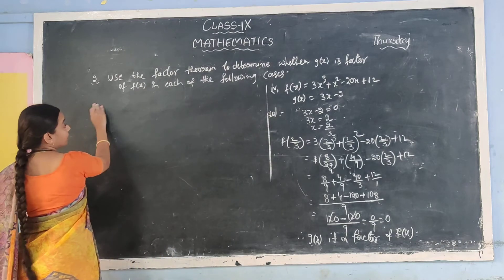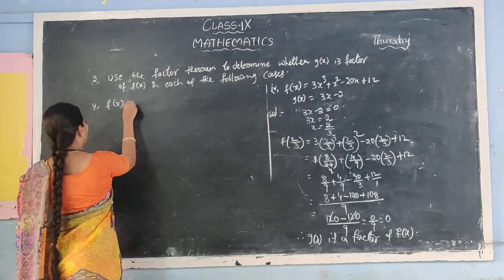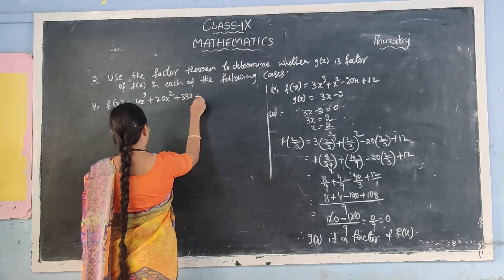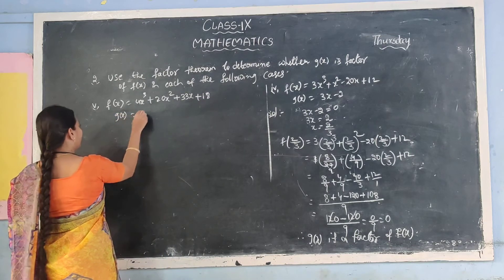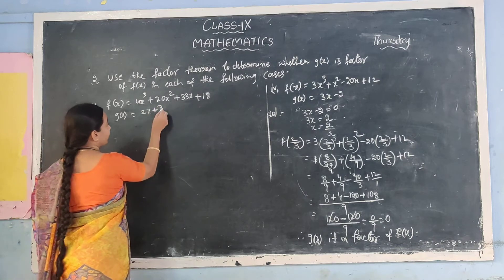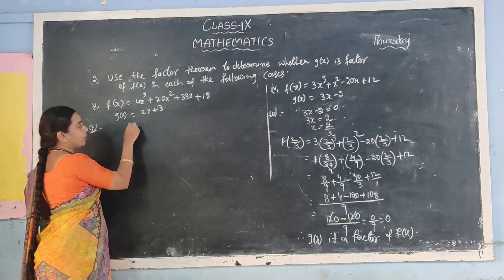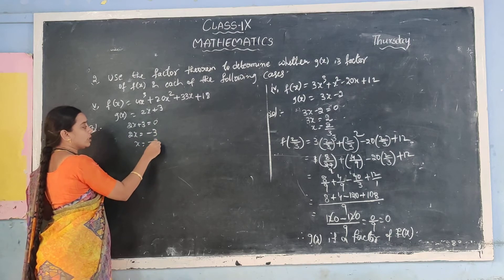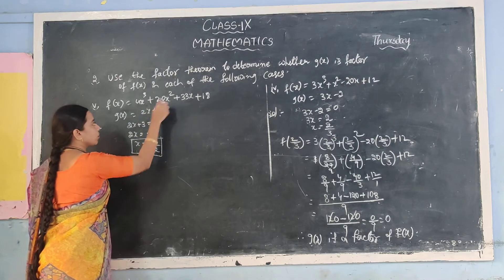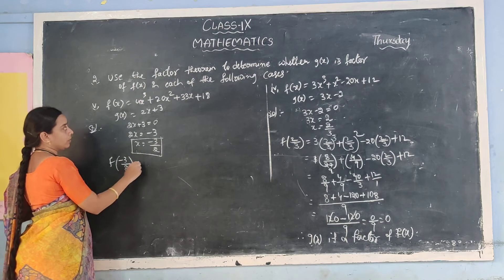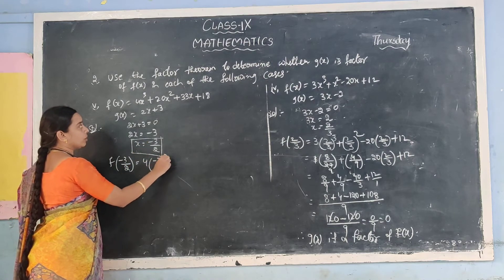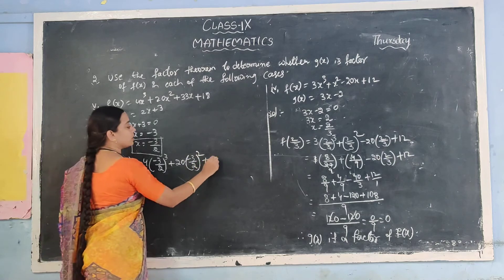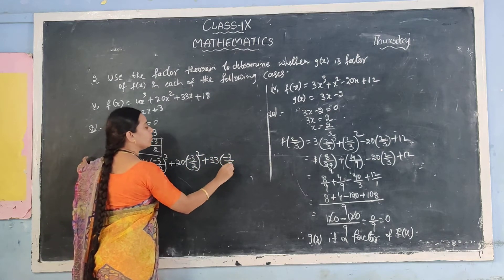Next, the third one — actually the fifth one. p(x) is equal to 4x cubed plus 20x squared plus 33x plus 18. g(x) is equal to 2x plus 3. Here also, first of all, 2x plus 3 is equal to 0; plus 3 moves to the right side as minus 3; 2 moves to the right side by division. So x is equal to minus 3 by 2. This x value is substituted in the place of x: f(minus 3/2) equals 4 into (minus 3/2) cubed plus 20 into (minus 3/2) squared plus 33 into (minus 3/2) plus 18.